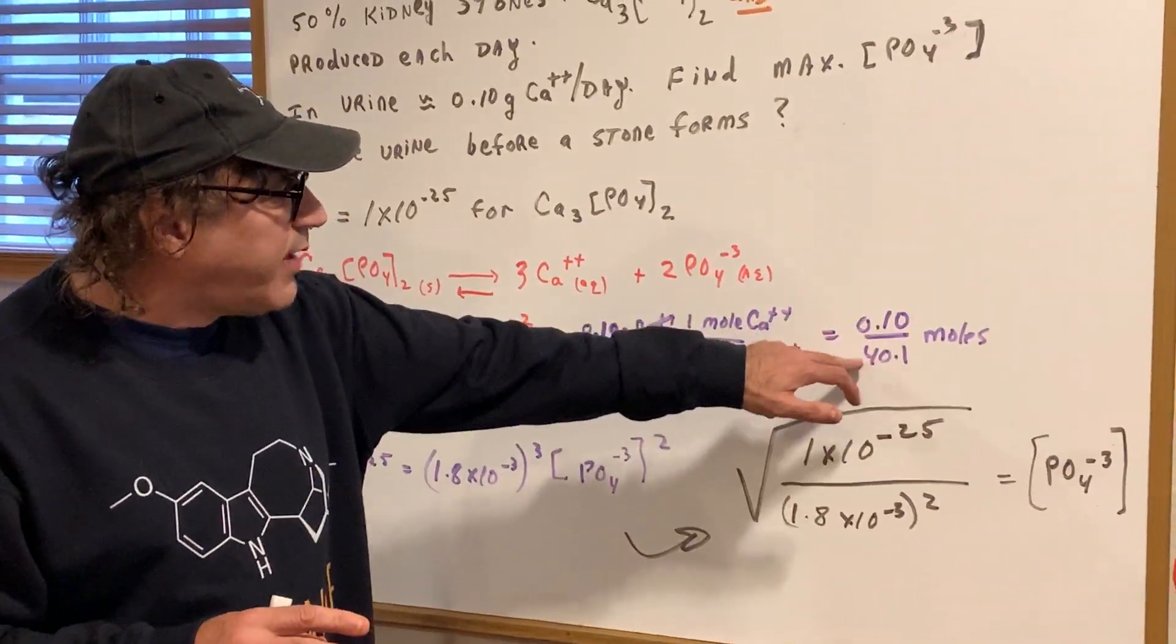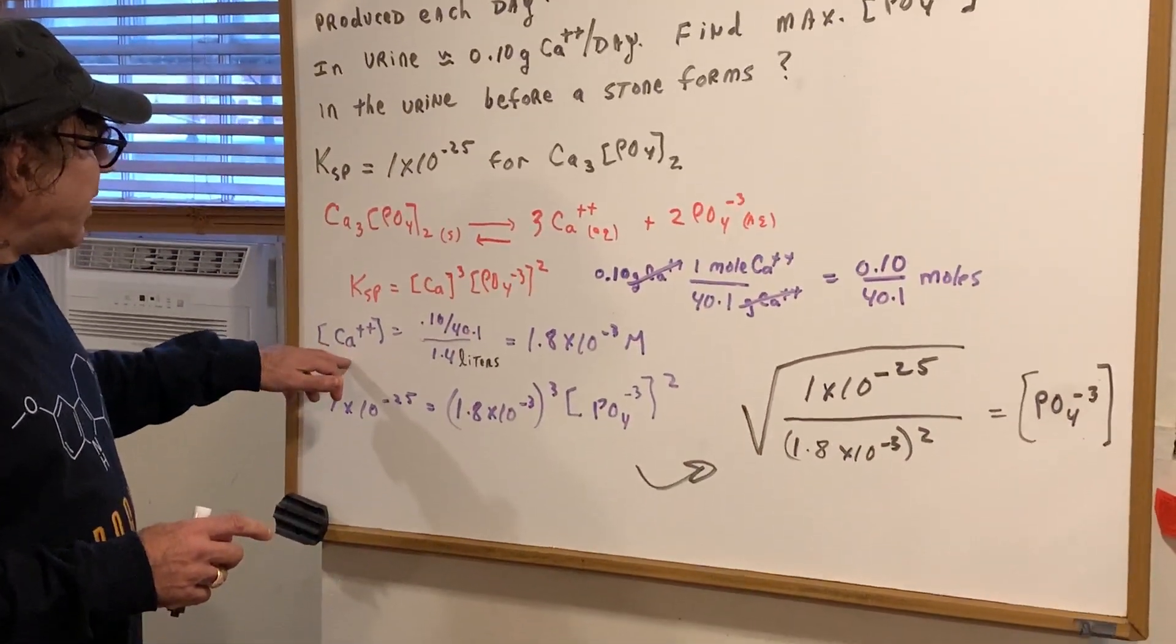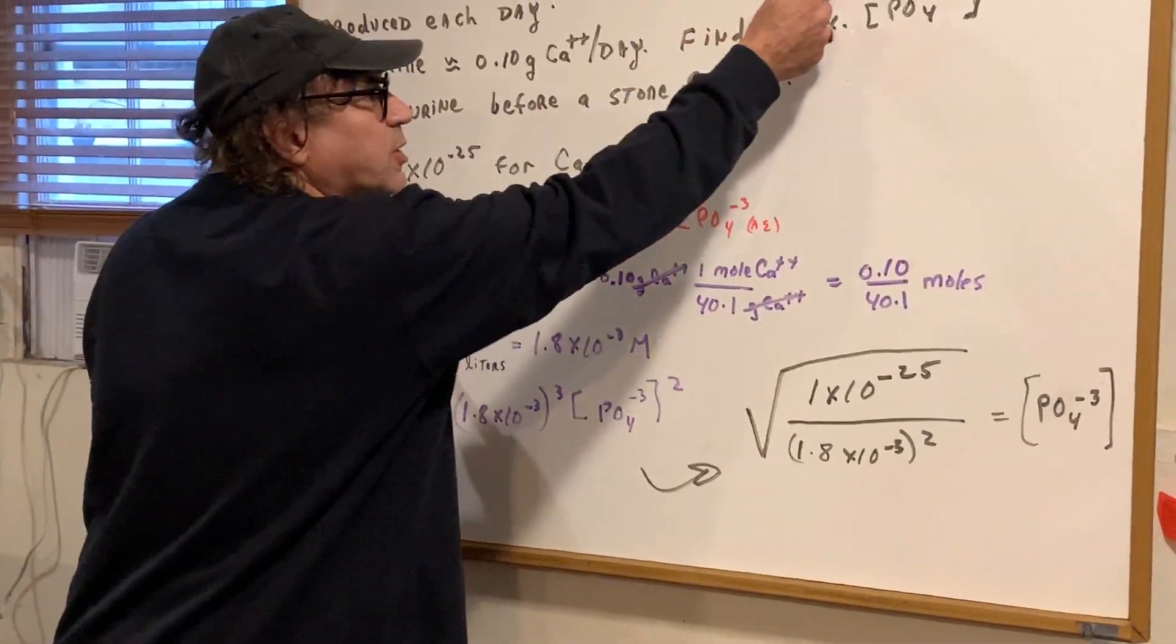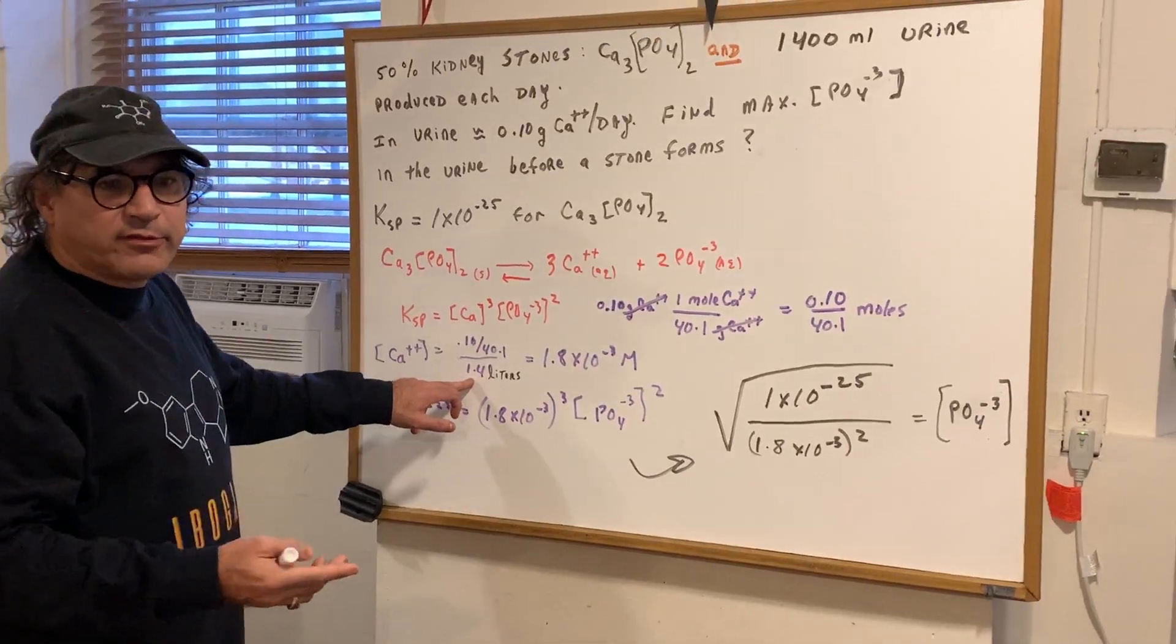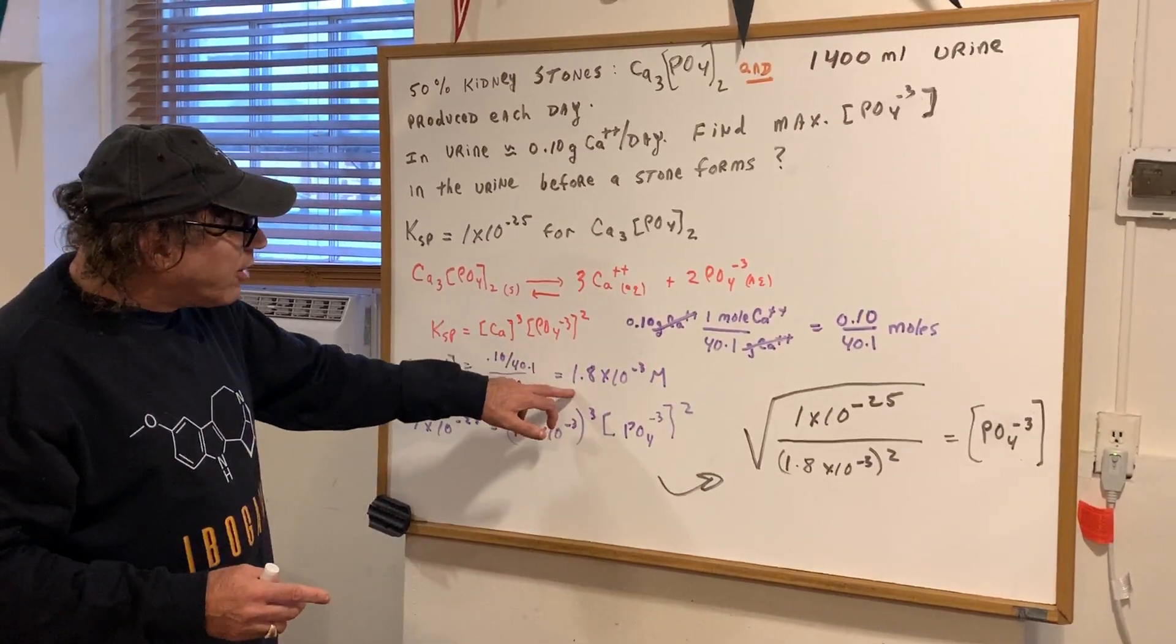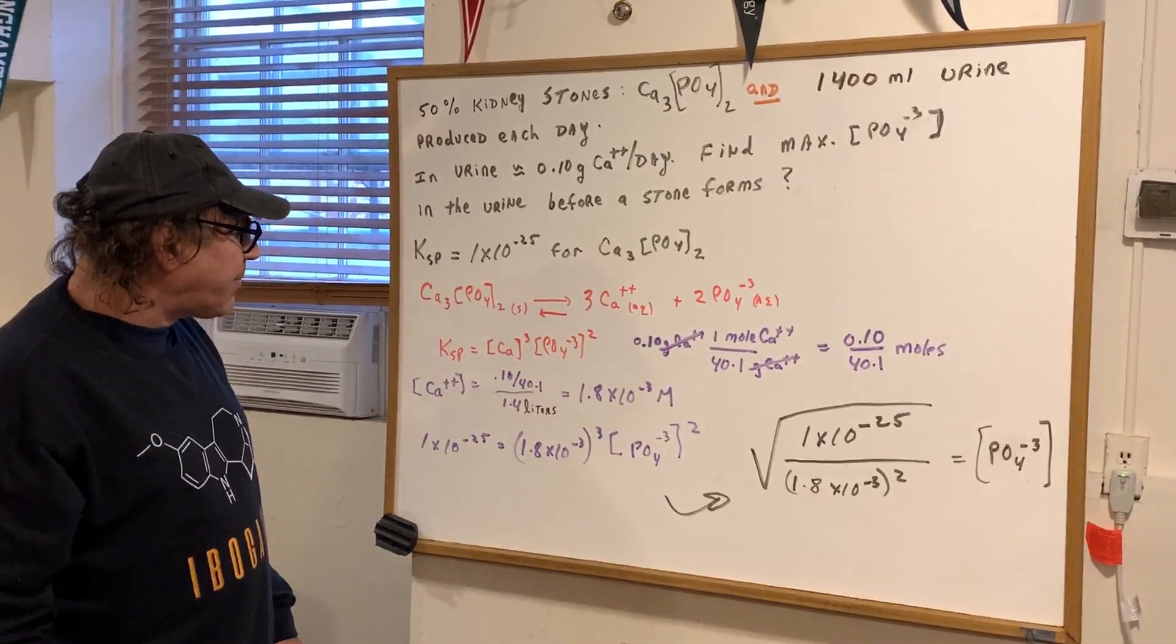So we get 0.10 over 40.1 moles. Now, the calcium concentration is those moles over the total liters. Well, what's the total liters of the solution? 1,400 mLs, which is 1.4 liters. With the calculator, I got 1.8 to the minus 3 molar. That's the calcium concentration.